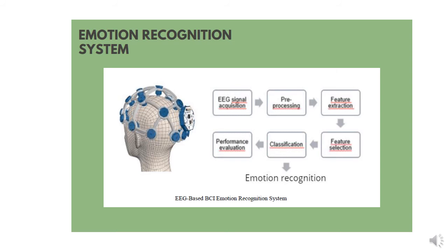The components of the emotion recognition system are the following: signal acquisition with a headset; pre-processing to eliminate artifacts such as blinking or heartbeat signals and noise from electrical sources; feature extraction to capture the most relevant characteristics of the EEG signals; classification using machine learning algorithms; and performance evaluation with accuracy calculation.